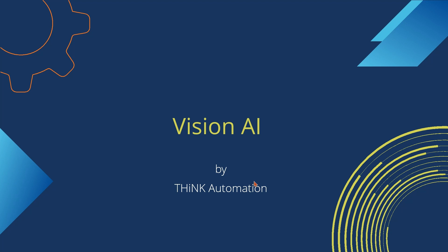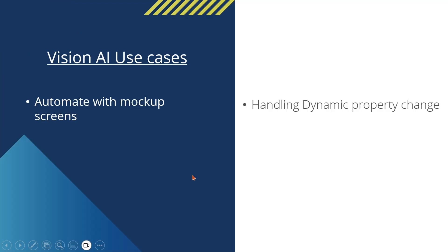Vision AI is an AI feature in Tricentis Tosca from version 14.0 onwards — approximately three to four years ago. You can use Vision AI even when the application is not yet developed; only the mockup screen or mockup application needs to exist. This supports a shift-left approach. The second use case is when you have an application where properties change dynamically and you do not know when those changes will happen.